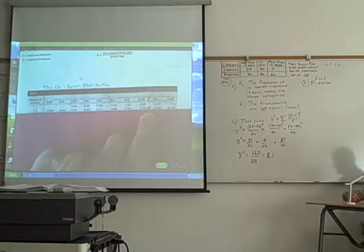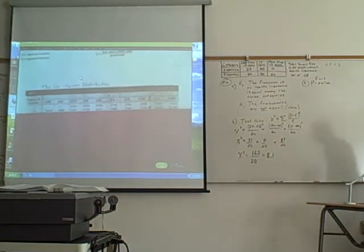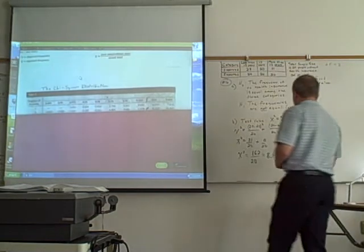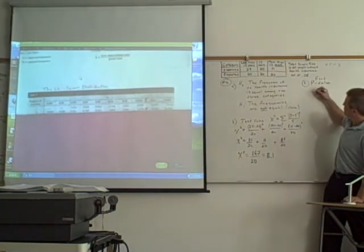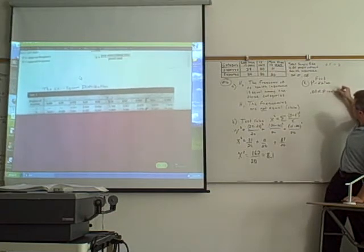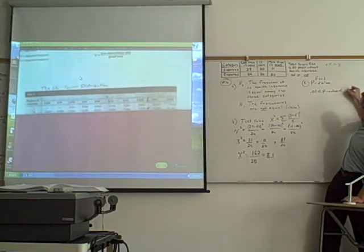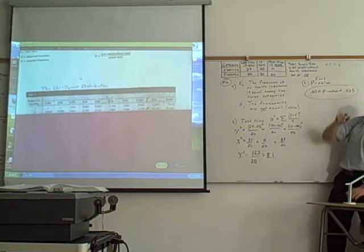Right. If my test value falls between these two values, chi-squared values, then my p-value would fall between these two alpha values up here. So our p-value is between 0.01 and 0.025. So the way we write that, write your smaller number on the left, 0.01 is less than your p-value, which is less than 0.025. We know the p-value falls in that interval somewhere.